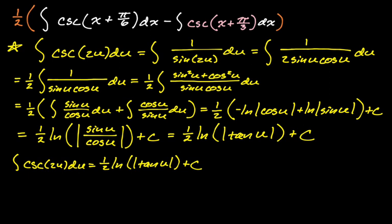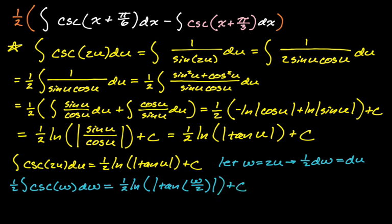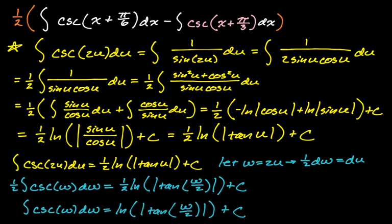Now I need to get this back to just cosecant of w. I'll let w equal two u, meaning one half dw equals du. Substituting, the integral of cosecant of w with du equals one half dw, and this should equal one half natural log absolute value of tangent of w over two. Multiplying both sides by two gives us the integral of cosecant of w dw equals natural log absolute value of tangent of w over two. So we now have a formula to integrate cosecant of w.